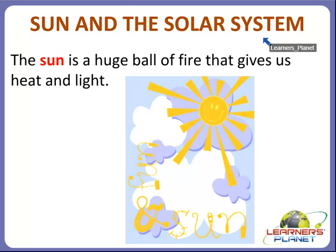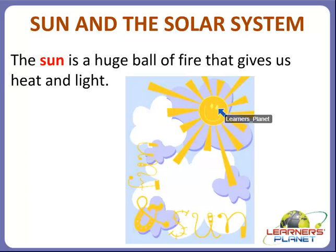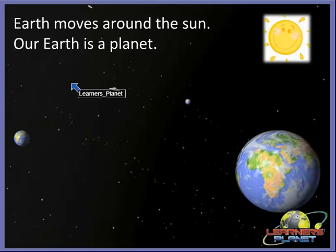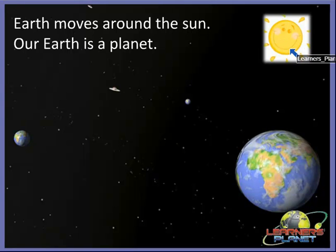So what is actually the sun? The sun is a huge ball of fire that gives us heat and light. Earth is the planet on which we live, and Earth moves around the sun. Our planet moves around the sun, so we can say that our Earth is a planet.